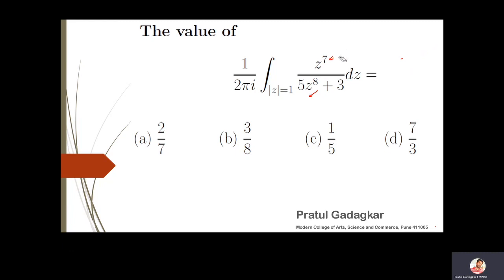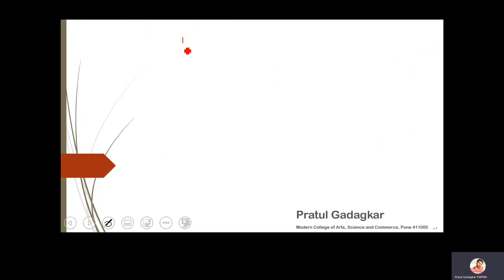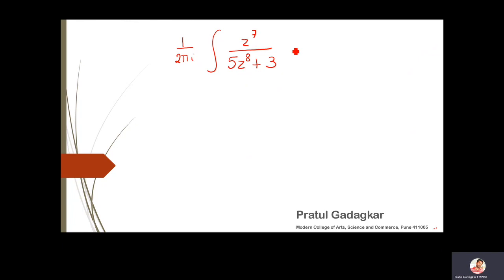Now let me carry over to the next page. We look at one over two pi i, the integration of z raised to seven over five z raised to eight plus three dz, and this integration is over a unit circle. This reminds us of our standard argument principle.